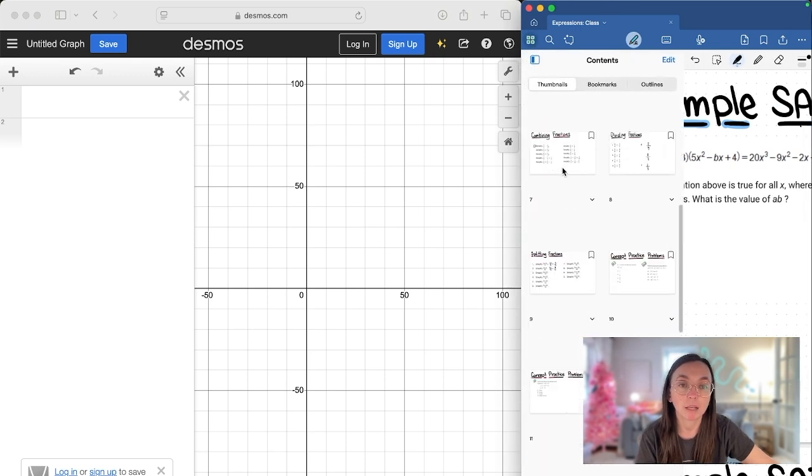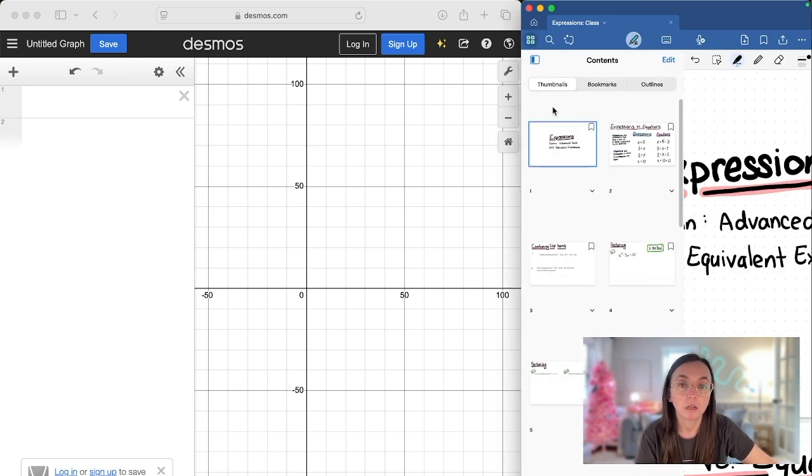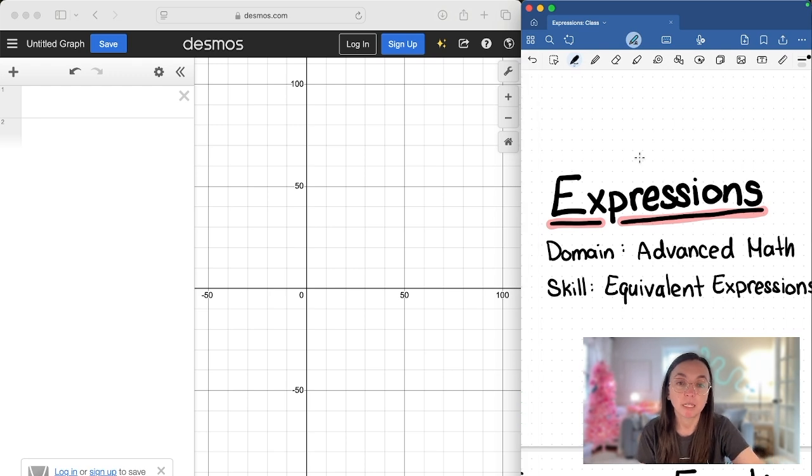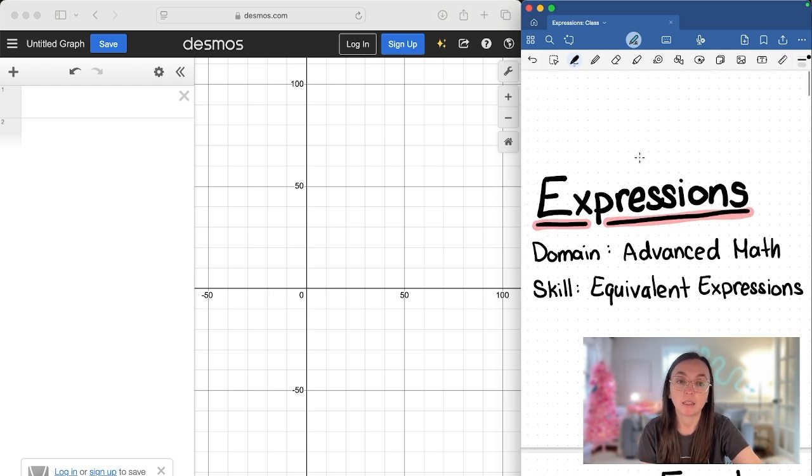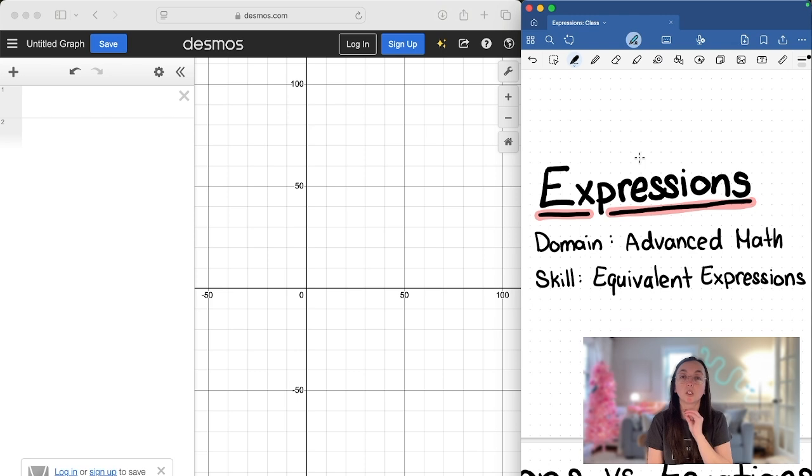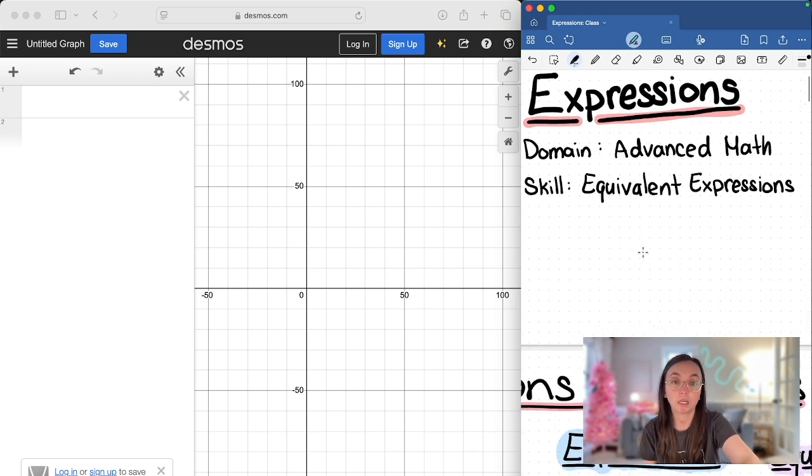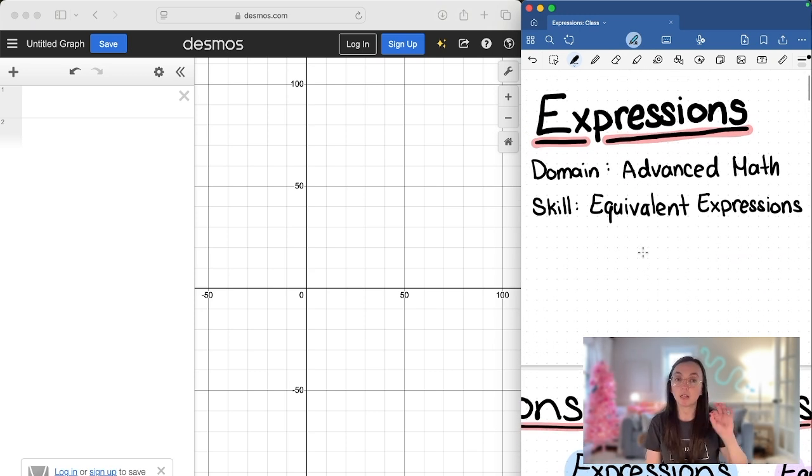Let's jump up there really quick. If you take a practice SAT, they should give you some feedback as to which domains you have to work on. For the math section there are four different domains. This particular domain that we're working on today is the advanced math domain, and the skill within that domain is equivalent expressions.